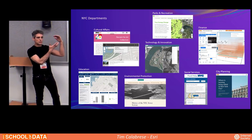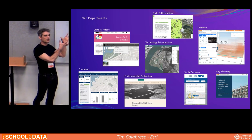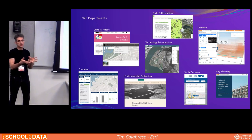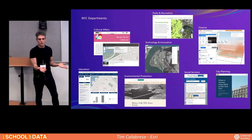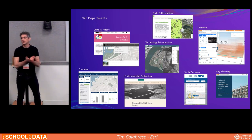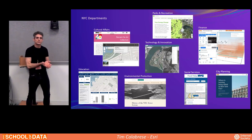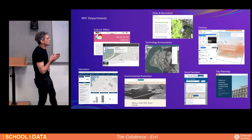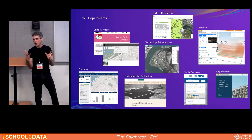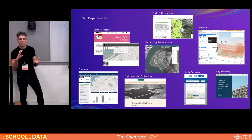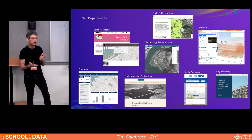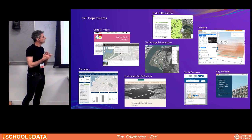Parks and Recreation has tree canopy story maps. The idea of just having a simple map isn't always enough — you want software that includes the webpage and text that explains the map and allows people to interact with it in a guided way. The Department of Finance's property information portal, released in January to replace the digital tax map, is a custom-built application on our ArcGIS platform that allows for 3D visualization of tax lots and property.